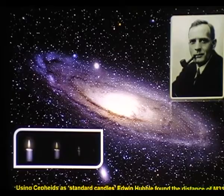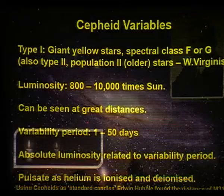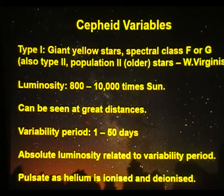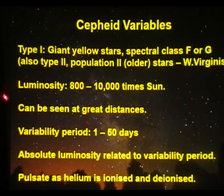There are actually two types of Cepheids. Hubble used the wrong type when he first estimated M31, and he estimated it would be too close — around 900 million light-years rather than 2.5 million light-years. Their luminosity is 800 to 10,000 times that of the sun, useful for measuring great distances. The period of variability is 1 to 50 days, and the absolute luminosity is related to the variable period — so they're very handy things.